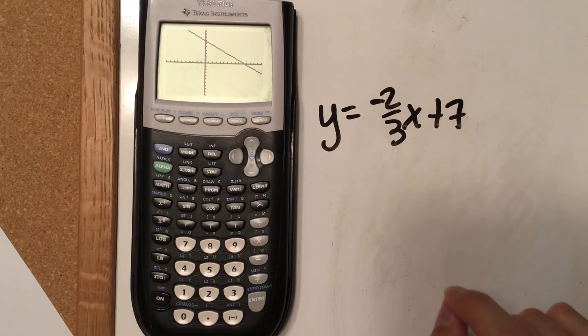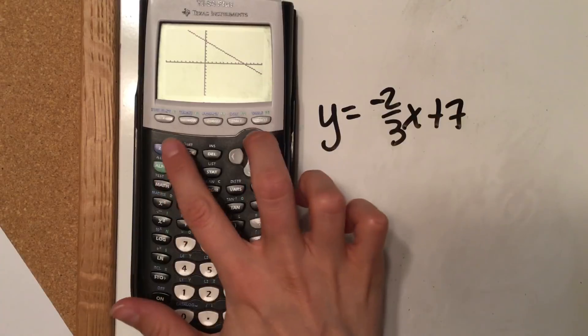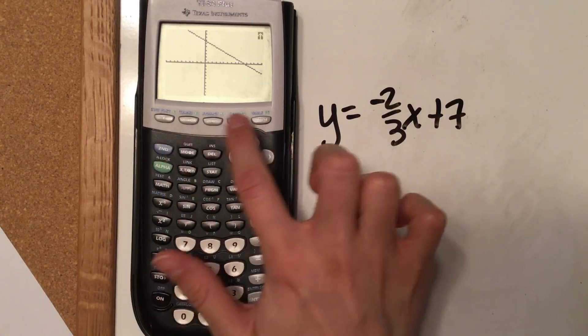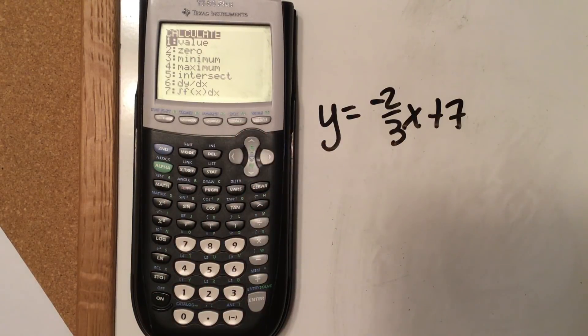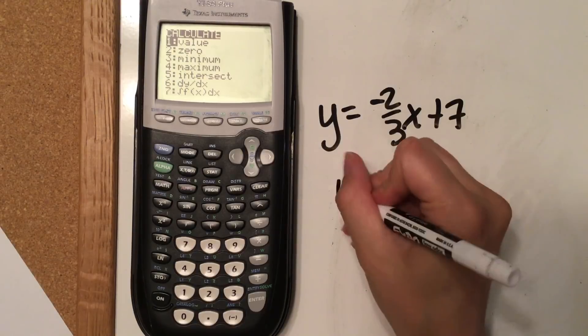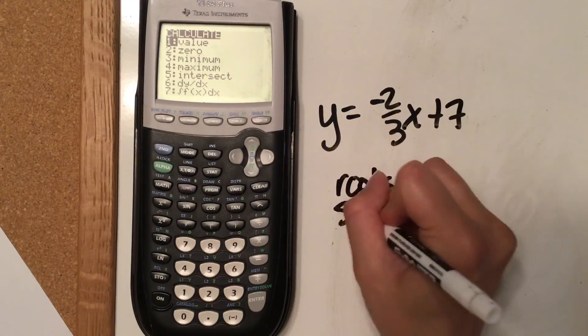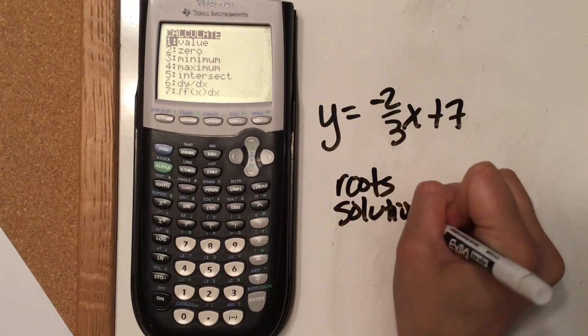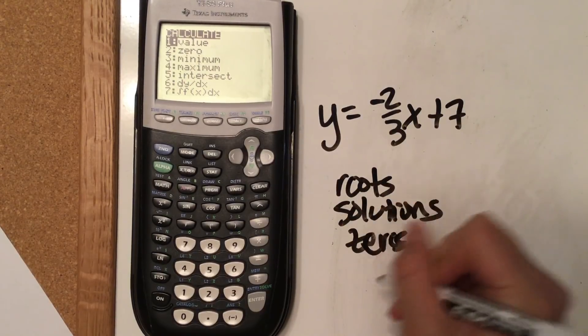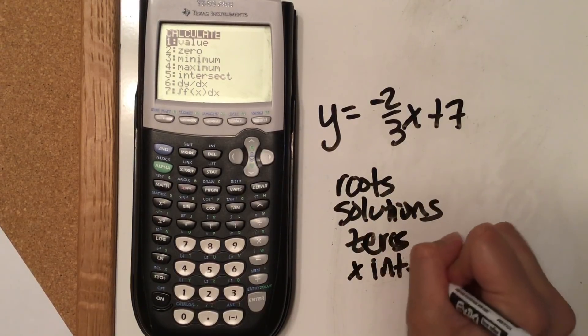And it is. If we want to find the x-intercept, we're going to calculate the x-intercept, so we're going to go here. X-intercepts are known by several different names. You've got roots, solutions, zeros, x-intercepts, and factors.